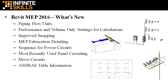Some of the 2016 new functionalities and features include piping flow units. Here you can specify values for flow in liters per minute. You also have performance and volume-only settings for calculations.